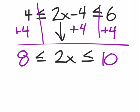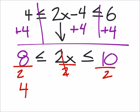Now, if on the off chance we have to divide at this point or multiply by a negative, we would still flip both of the signs. But since we're not, that's not a problem. We'll divide everywhere by 2 so we have a coefficient of x that's 1. 8 divided by 2 is 4, and this is less than or equal to what remains is x. That's less than or equal to 10 divided by 2 is 5.